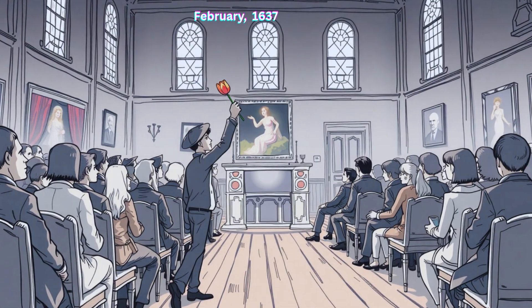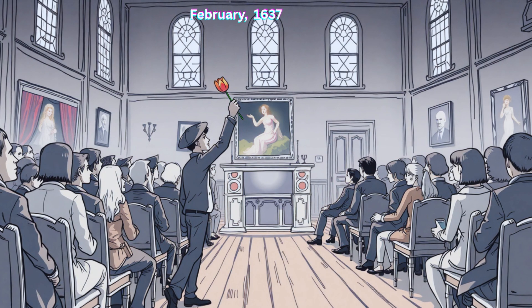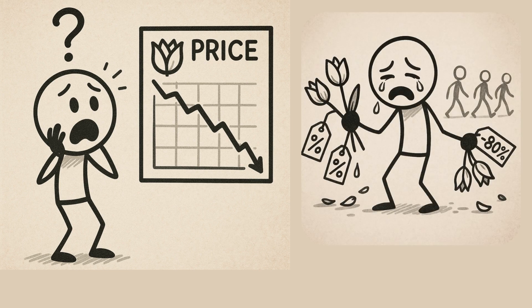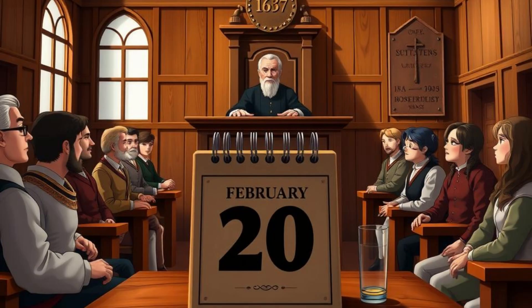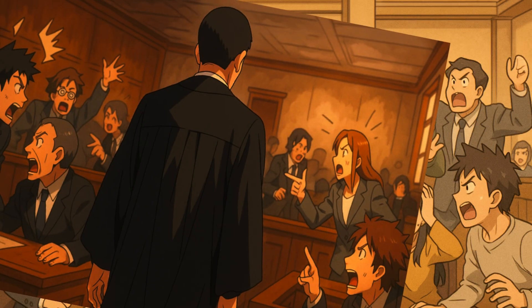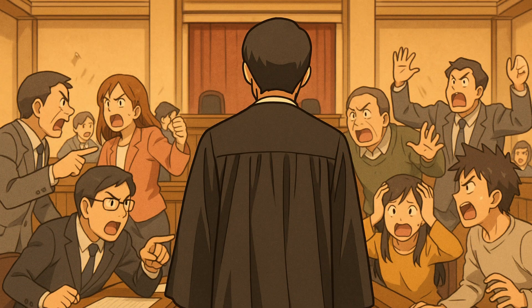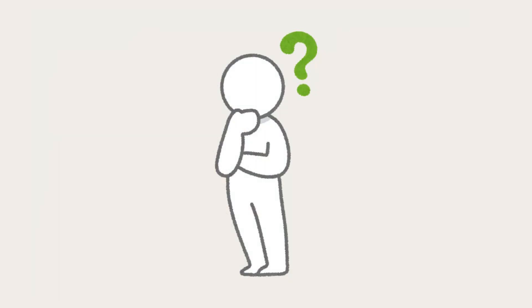But in February 1637, panic set in. At an auction in Harlem, no one bid. Prices crashed. Contracts became worthless. People had agreed to pay ten times what the bulbs were now worth, and the law didn't help. These tulip contracts were early forms of futures trading, but without any regulation, margins, or clearing systems. It's a powerful example of how futures contracts began and why they're carefully regulated today.